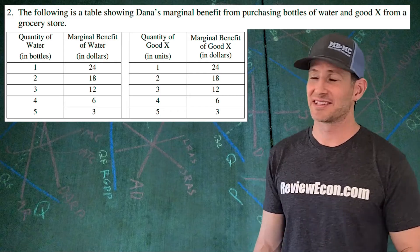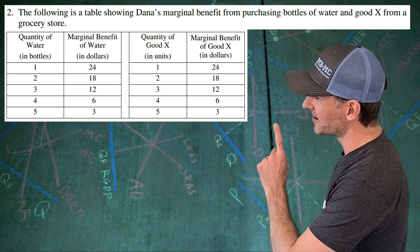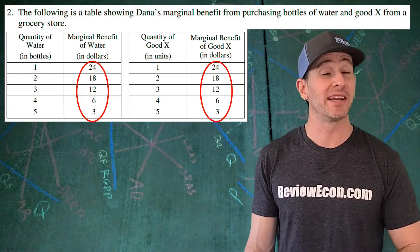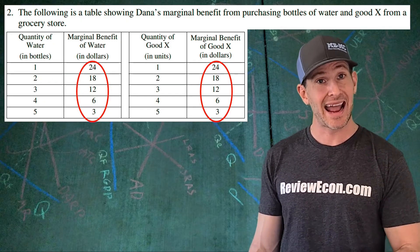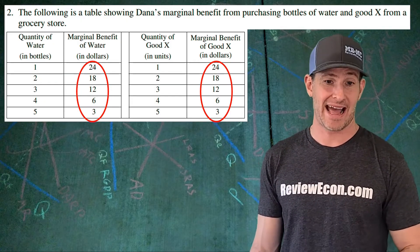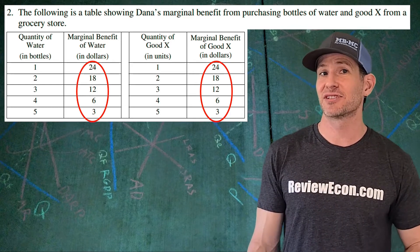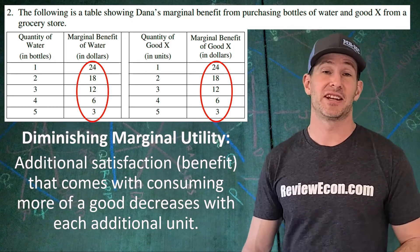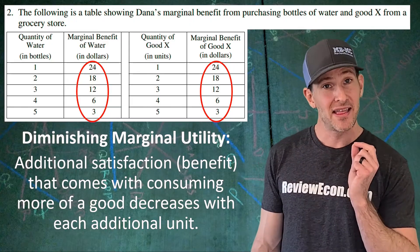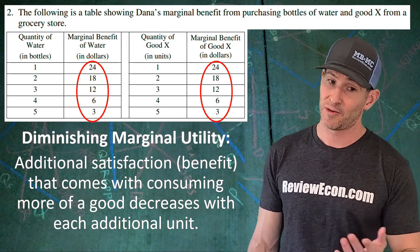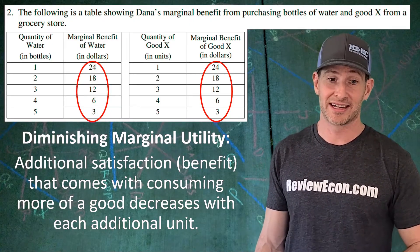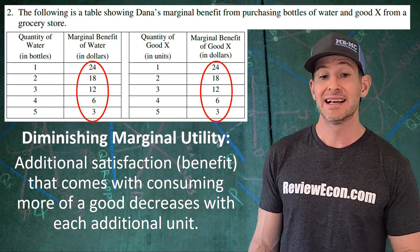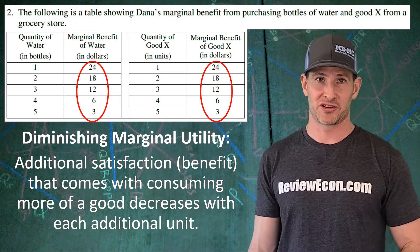This question is all based on this table we've got here, and it shows the marginal benefit that Dana received by consuming additional units of water and additional units of good X. We see in these numbers here diminishing marginal utility. The law of diminishing marginal utility tells us that the additional satisfaction or benefit, also called utility, that comes with consuming more of a good decreases with each additional unit.